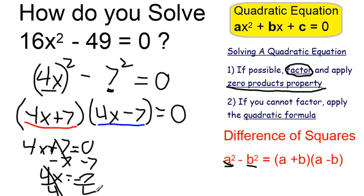And similarly, if I solve this one, I'm going to add 7 on both sides, and I get 4x = 7, or x = 7/4.